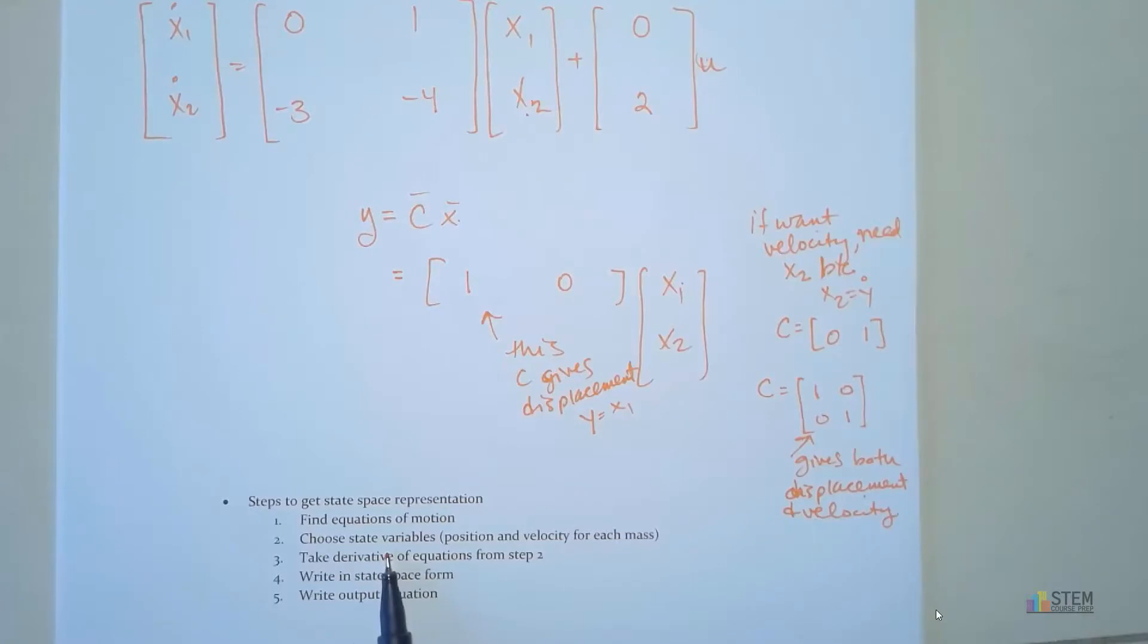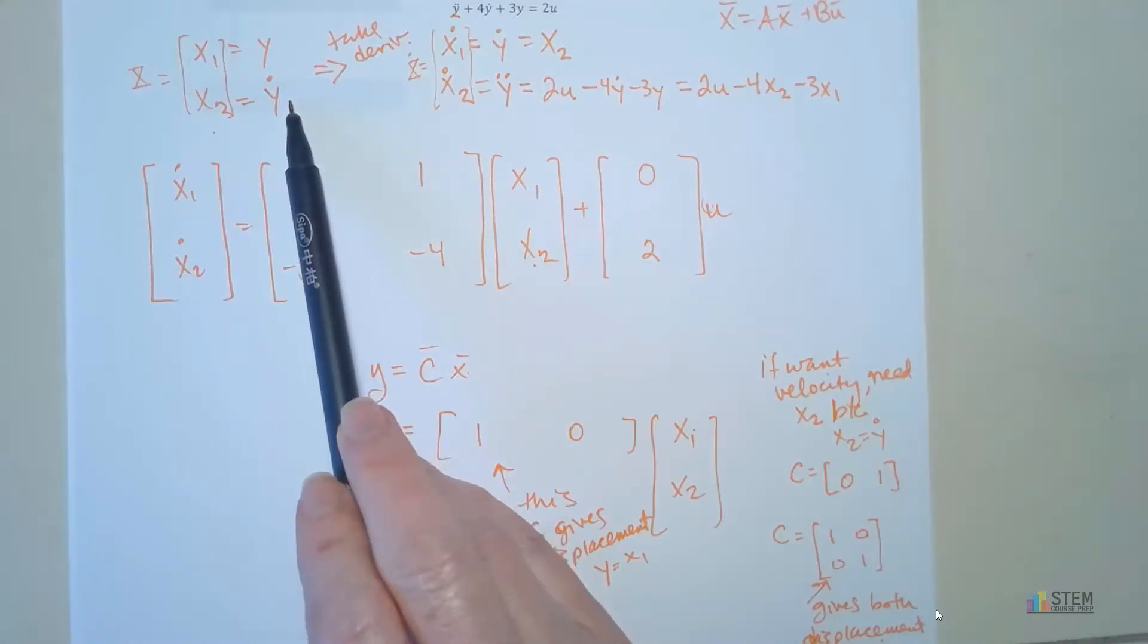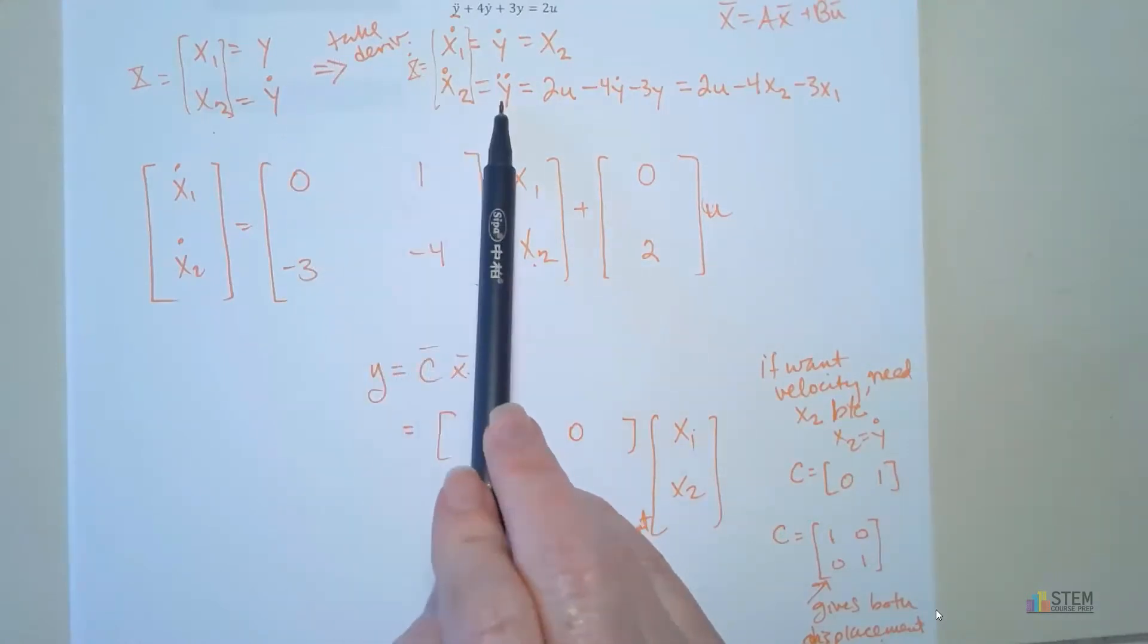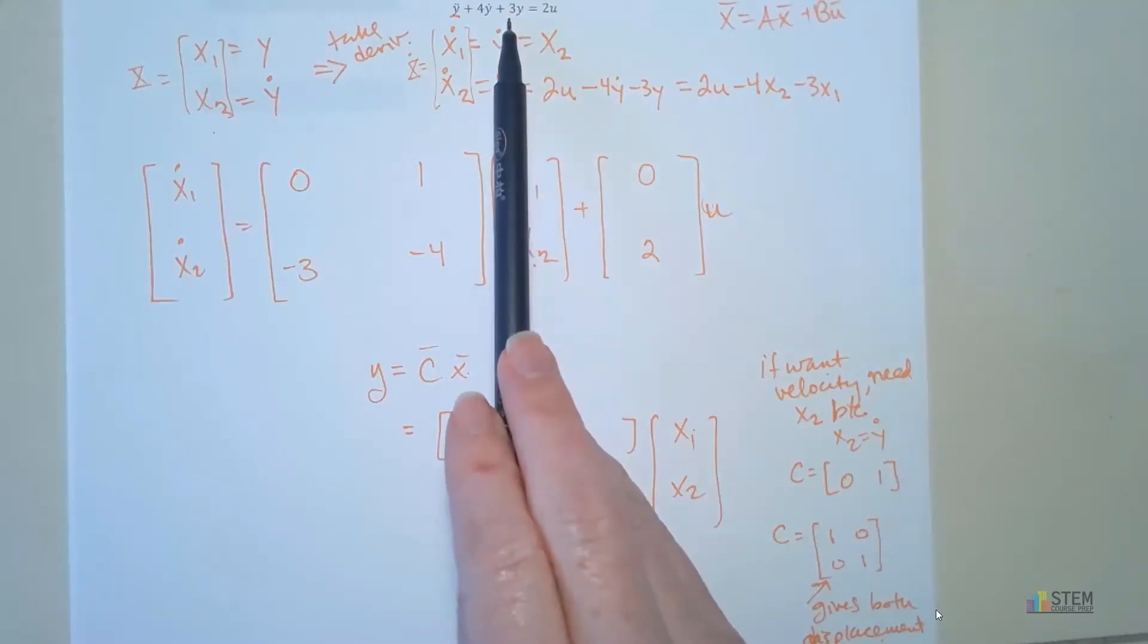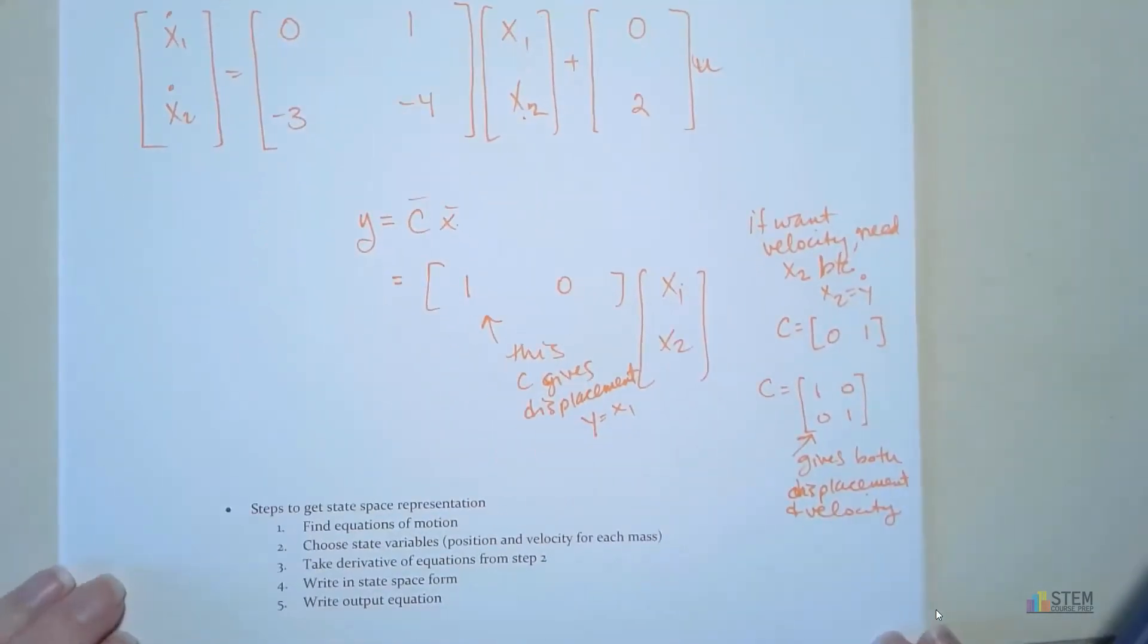Once you get those equations, you're going to choose your state variables. Now, remember, our goal is to get to our acceleration equation, our equation of motion. So that means for each mass, we need position and velocity. And we need that because, just like we saw up here, we had to have y and y dot. And we needed that because when we take the derivative, it gets us to y double dot, which takes us to this equation of motion. So you've got to be able to get to this equation. So for every mass, we want position and velocity. So if I have six masses, I need two state variables for each mass.